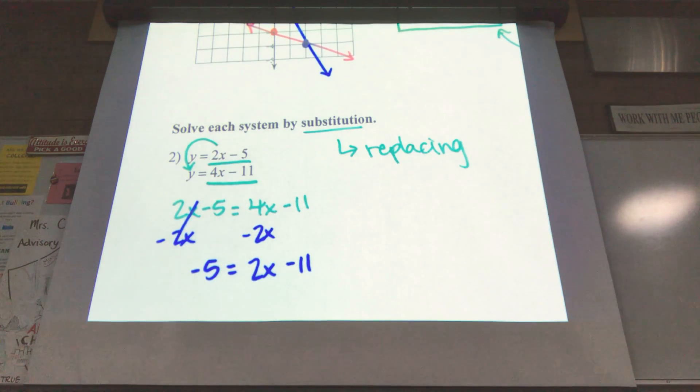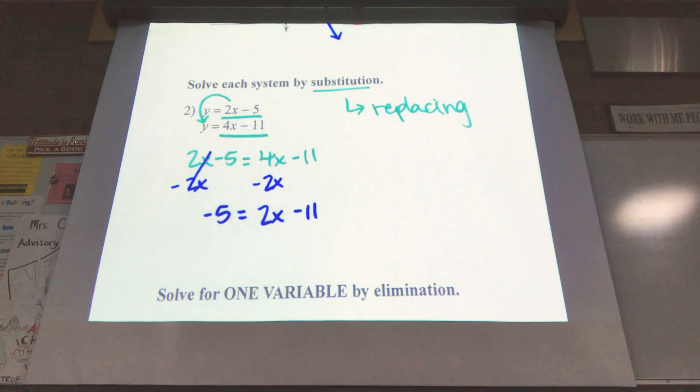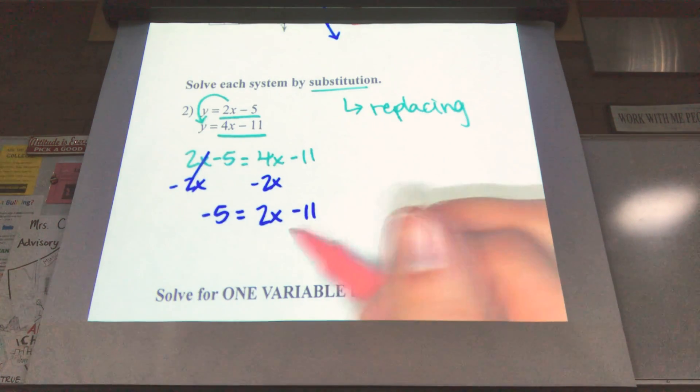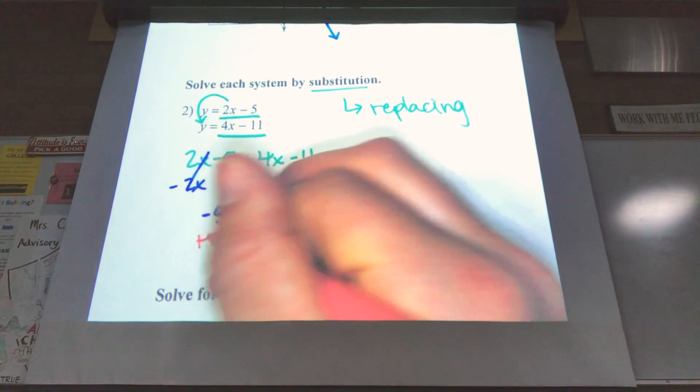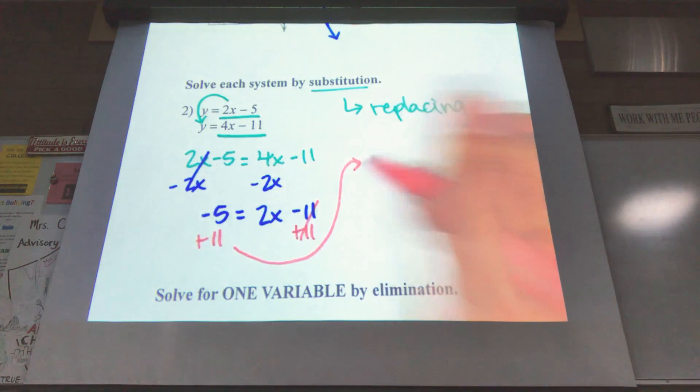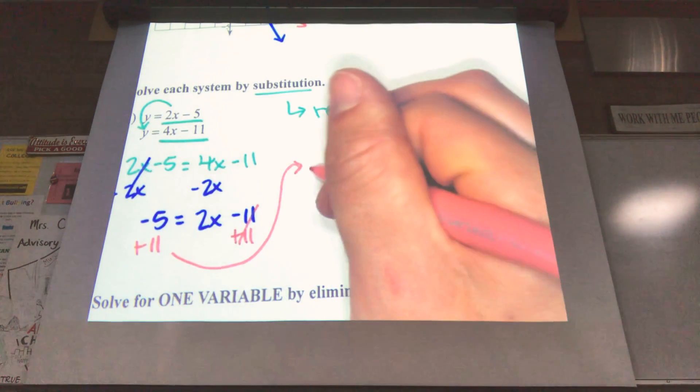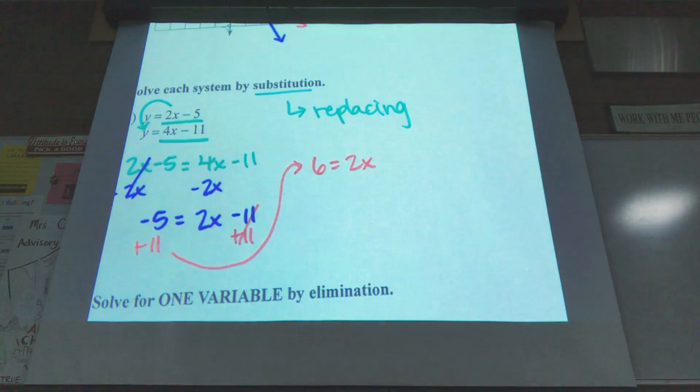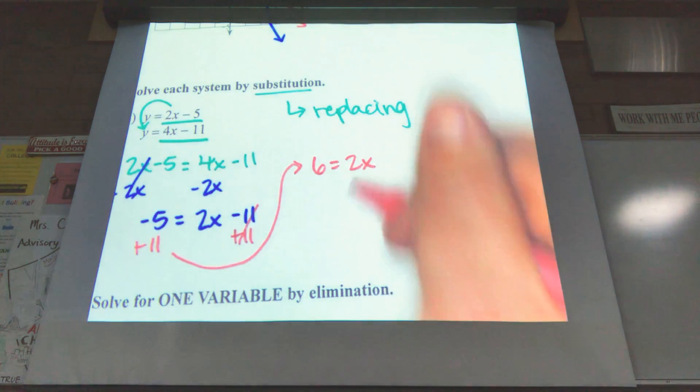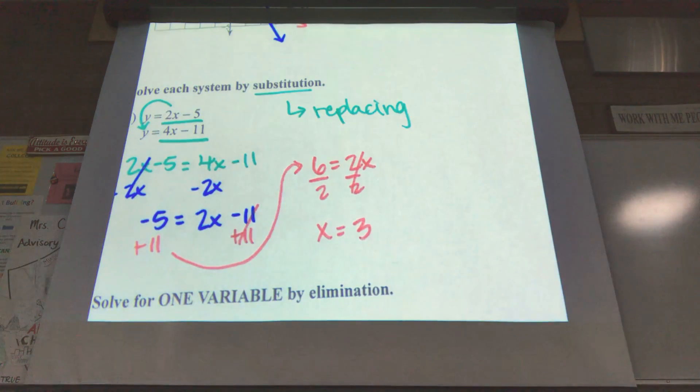Now I can go ahead and start solving this. I'll scoot it up a little bit. The first thing I need to do to get x by itself is going to be this plus or minus 11. Opposite of minus 11, add 11. Add 11 to both sides. Bring it over here just so you guys have more room. Negative 5 plus 11 is going to be positive 6 equals 2x. Last step. We divide by the 2. 6 divided by 2. x equals 3.